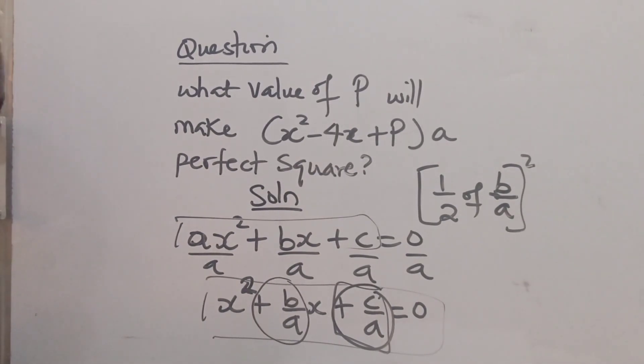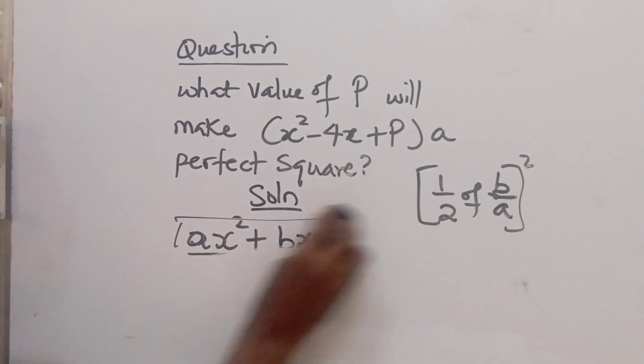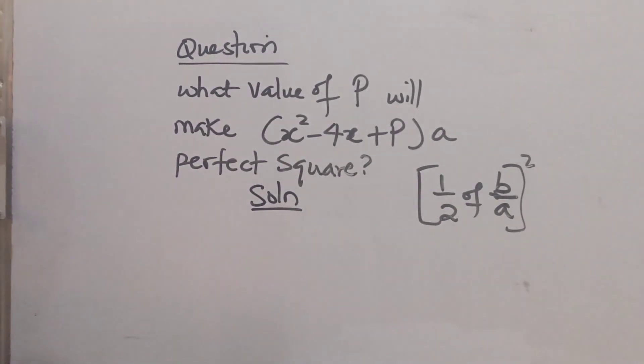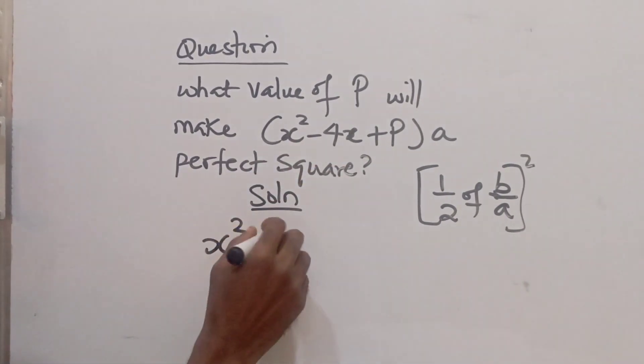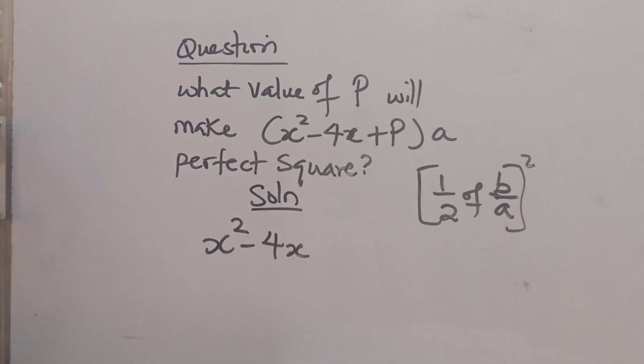So this is what this represents. So for it to be a perfect square, what we are going to do in this case is we are going to consider just this side. So I have my x squared minus 4x. So p would be...